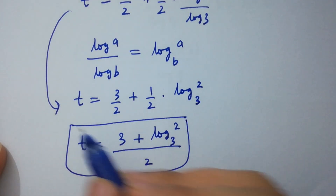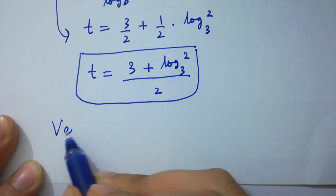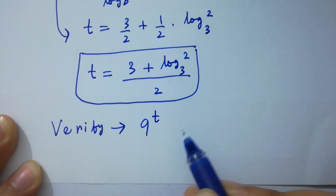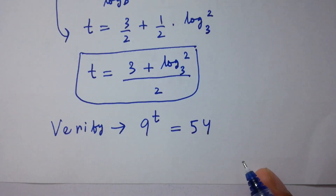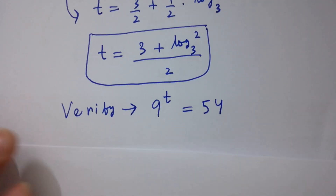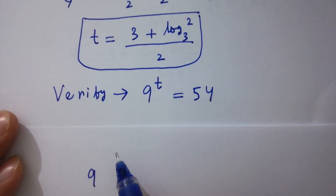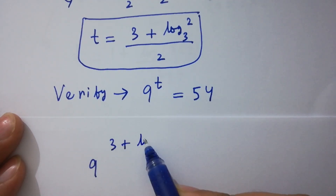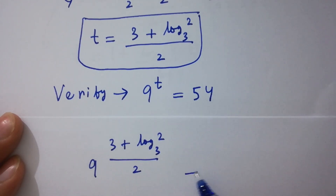That is the value of t. In the next step I am going to verify. We have 9 to the power t equals 54. Now putting the value of t: 9 to the power (3 plus log₃2) over 2 equals 54.